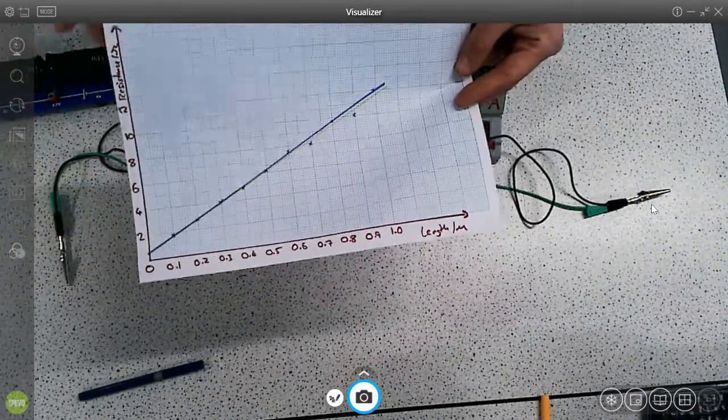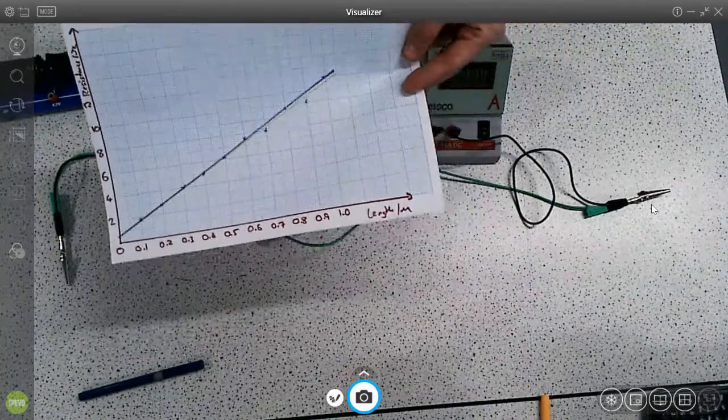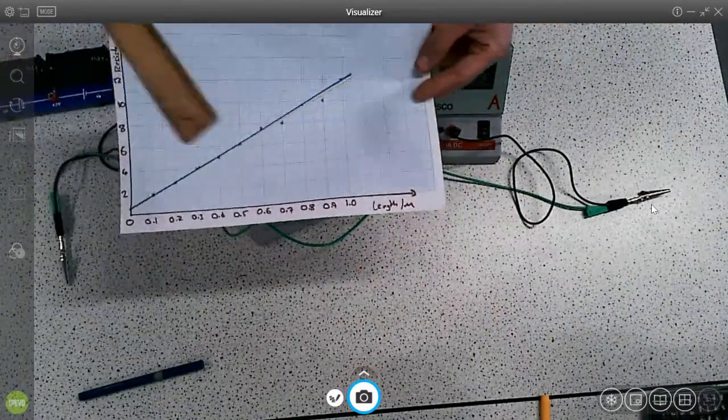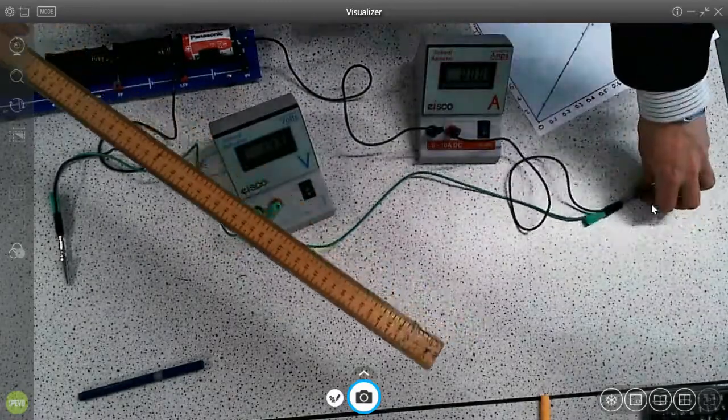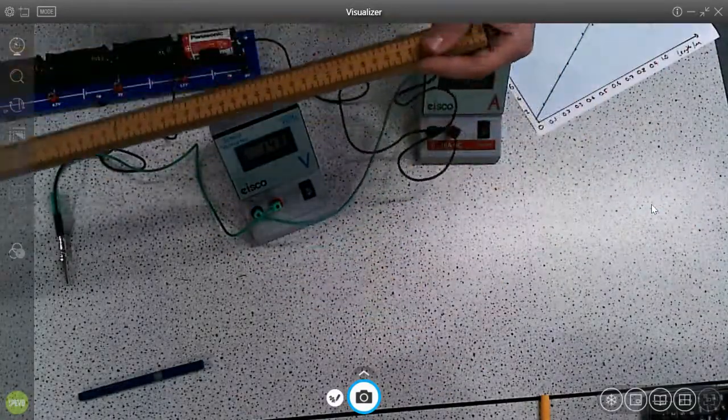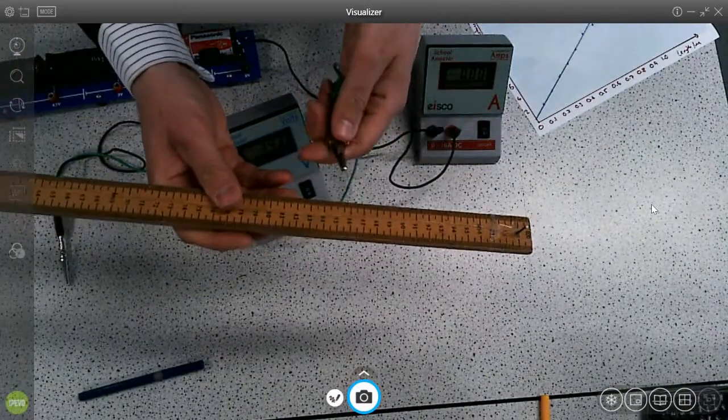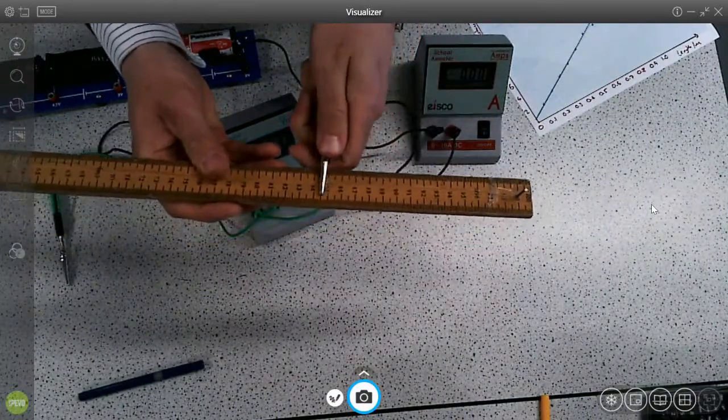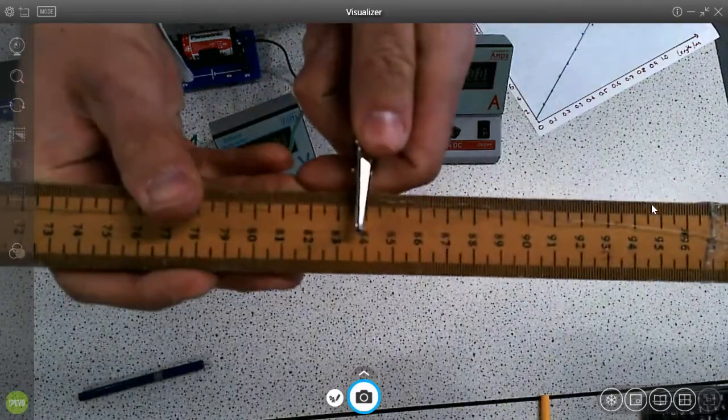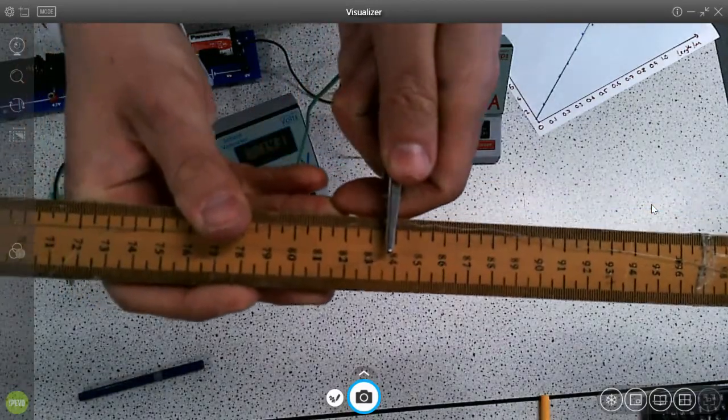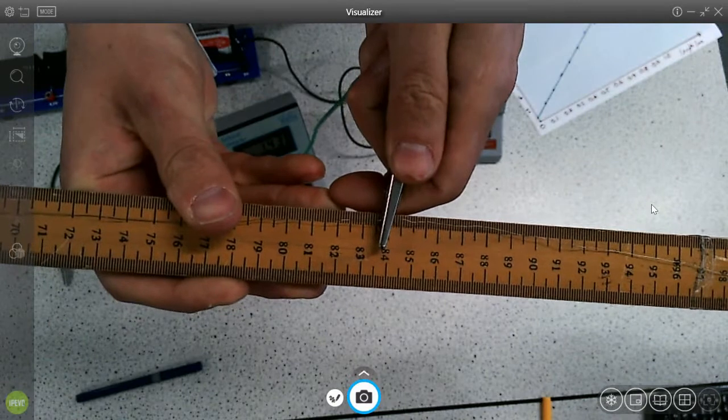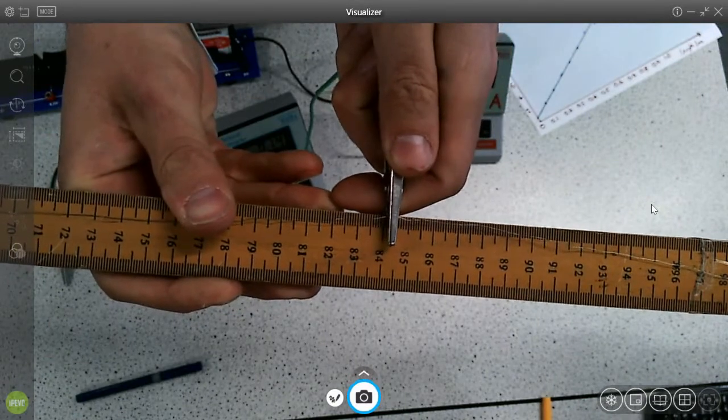The most likely source of error where it doesn't go through zero, zero is a systematic error due to measuring the length incorrectly. And what I mean by that is if you put the crocodile clip on the wire, you see that obviously the crocodile clip is quite thick. So what have I written down for my length measurement in this example here?